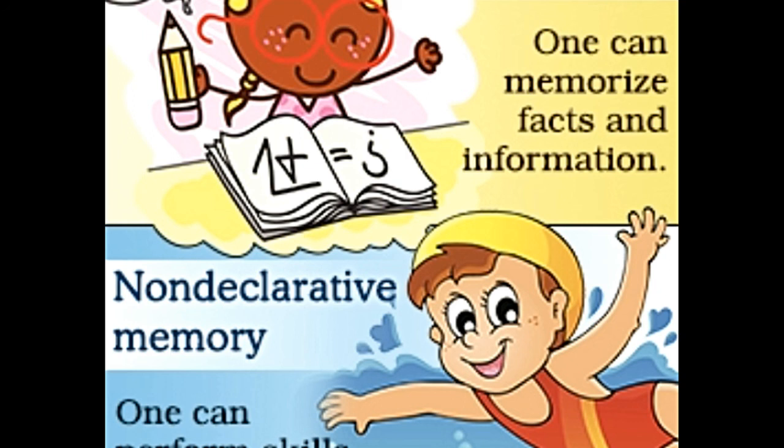From the aforementioned definitions and examples, we can understand the differences between these two types of long-term memory and infer which types of events get rendered in either of them. Memories are not only related to the heart and emotions, but also to the nature of events, which decides in which part of the brain they get stored and eventually become a memory.